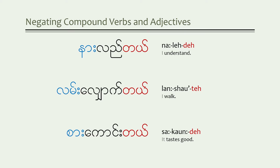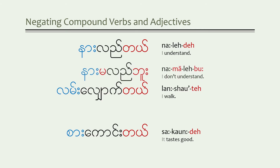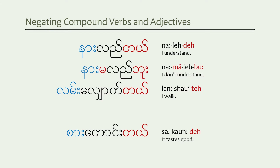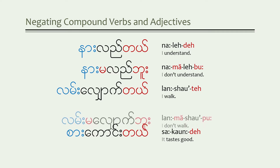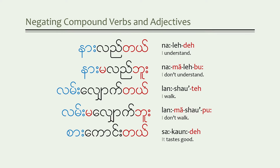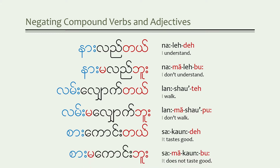Look for the placement of the first negative particle. In our first example, the positive particle is dropped and replaced with the final negative particle. But notice the first negative particle is not at the beginning of the verb — instead, it's placed between the two parts of the verb, between the two syllables. To say 'I don't understand': na-ma-le-bu. That same pattern holds for 'I don't walk': la-ma-shout-bu. And 'it doesn't taste good': sa-ma-ga-um-bu. In all three cases, the final negative particle remains in the last position.